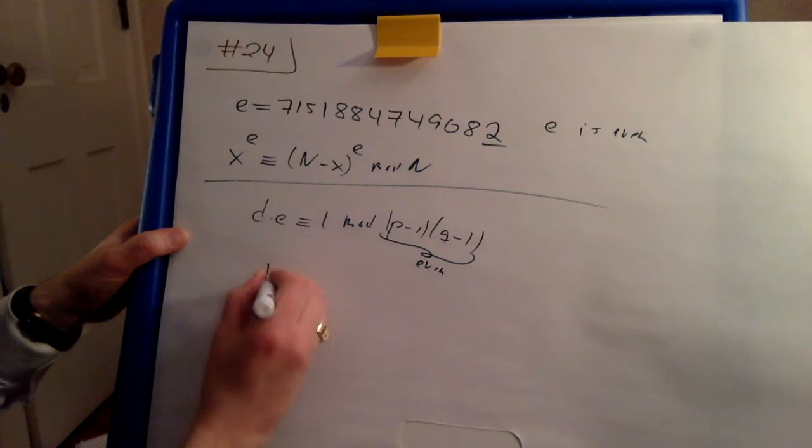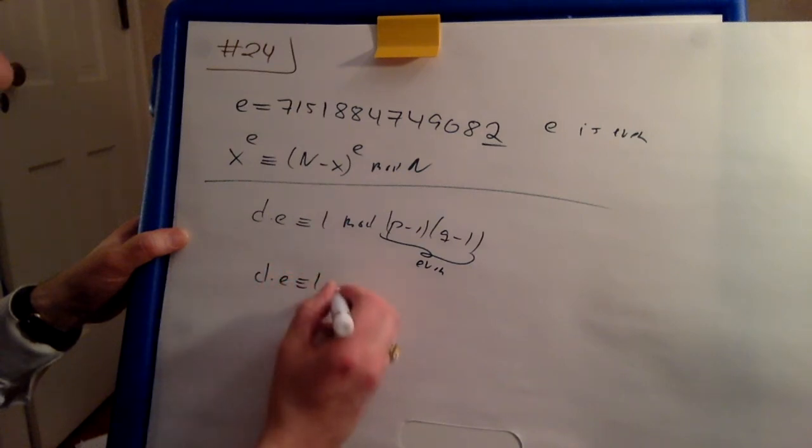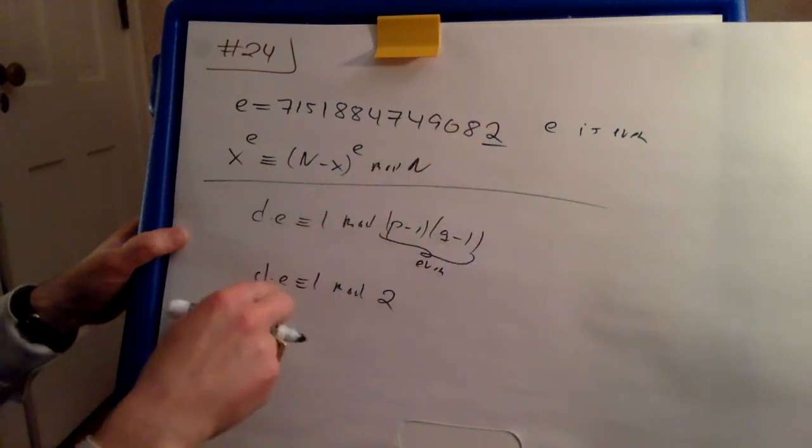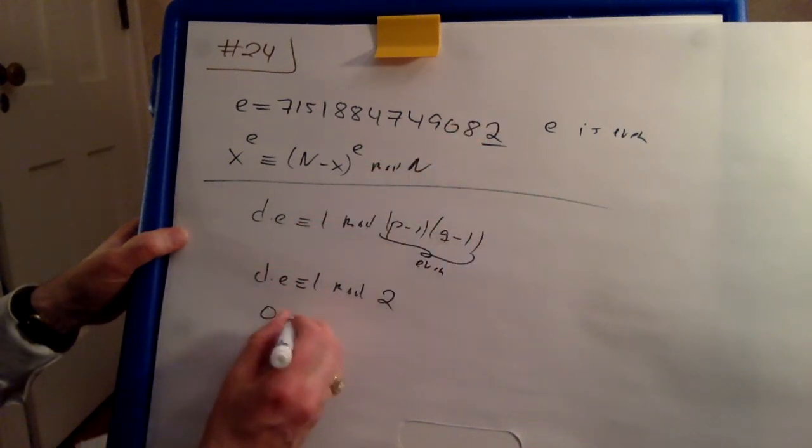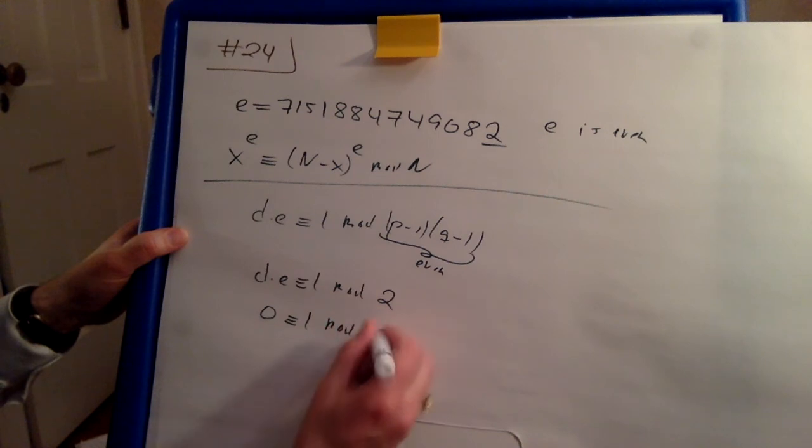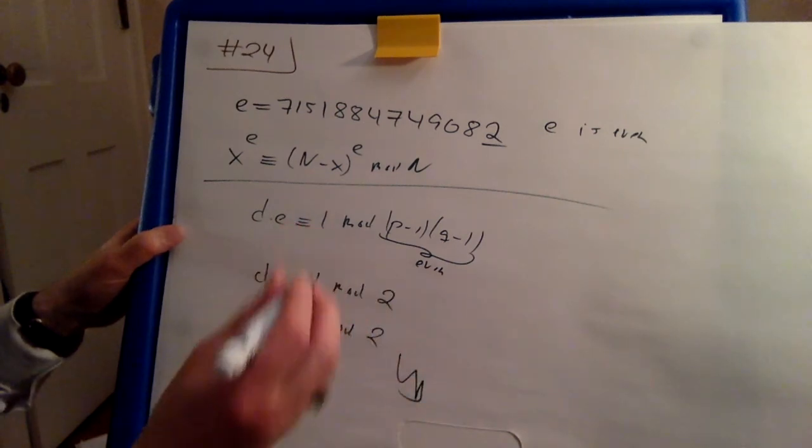Hence this equation d*e ≡ 1 has to hold mod 2. But e is even, so d*e ≡ 0 mod 2. So we have 0 ≡ 1 mod 2, and that's a contradiction.